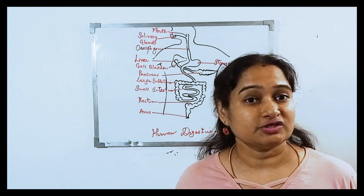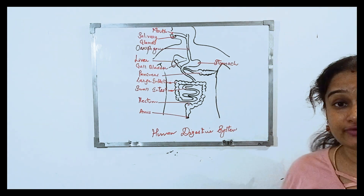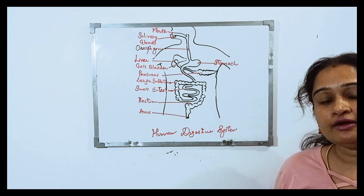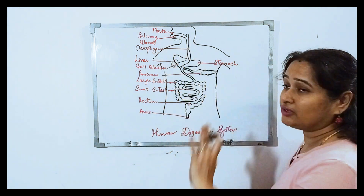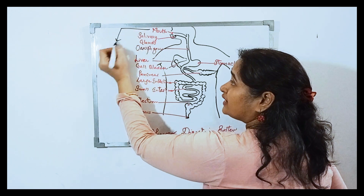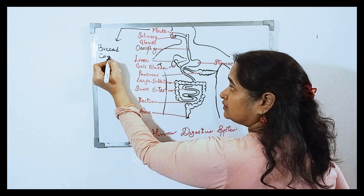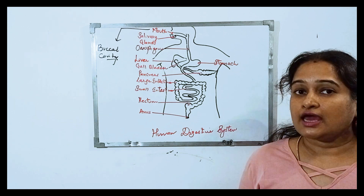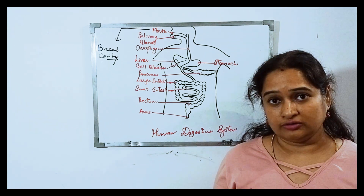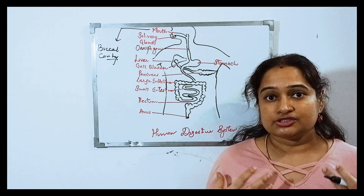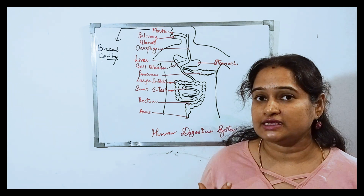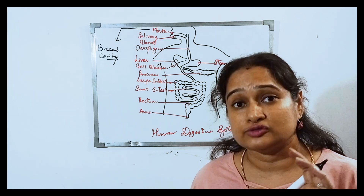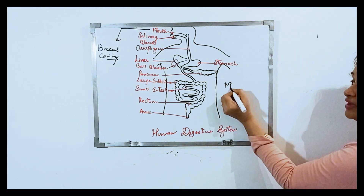We will now start with the human digestive system which follows holozoic nutrition. The first step is ingestion — the taking in of food — which in human beings takes place through the mouth, also called the buccal cavity. It consists of the tongue, teeth, and salivary glands. As you take food into your mouth, the first thing we do is chew the food. Chewing and grinding of the food with the help of teeth — this process is called mastication.